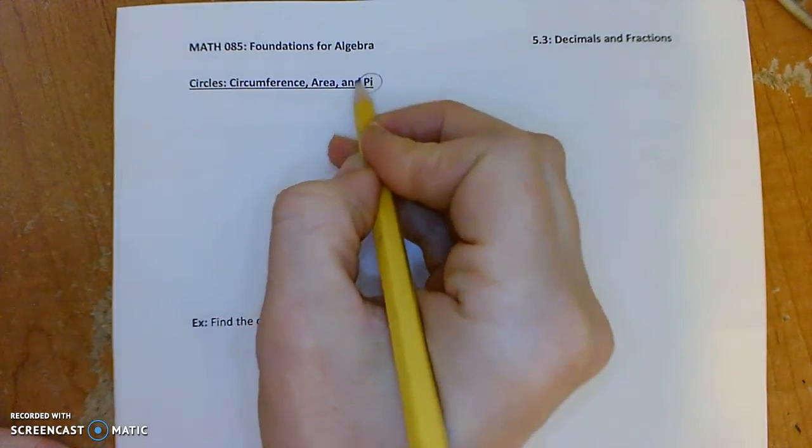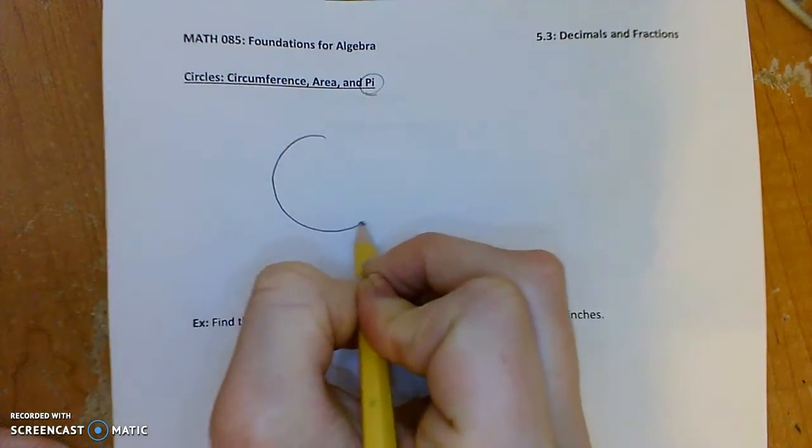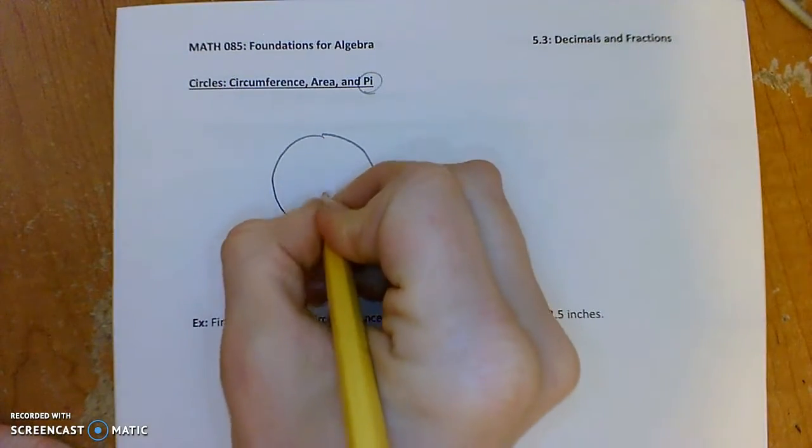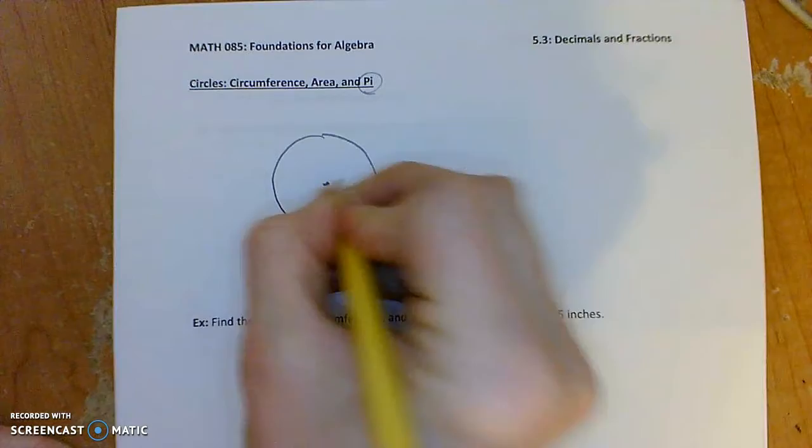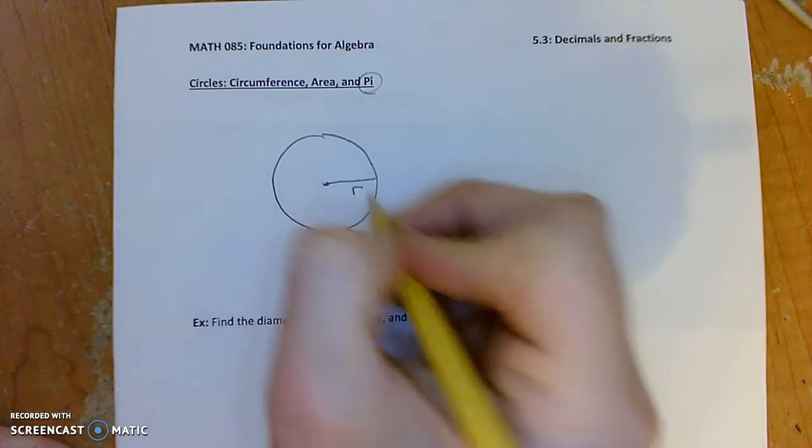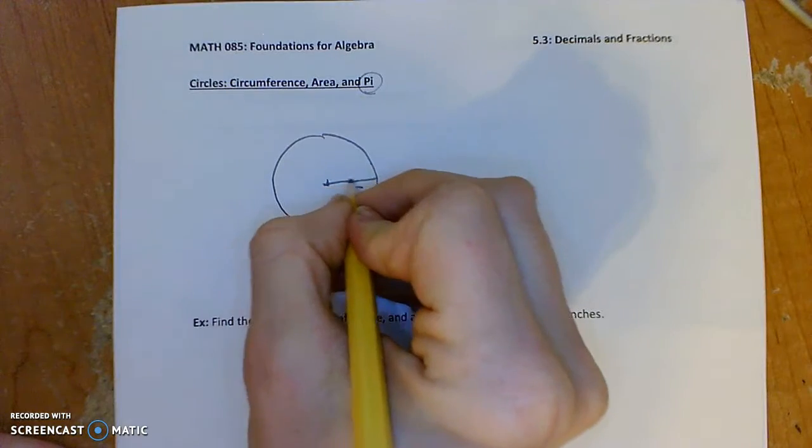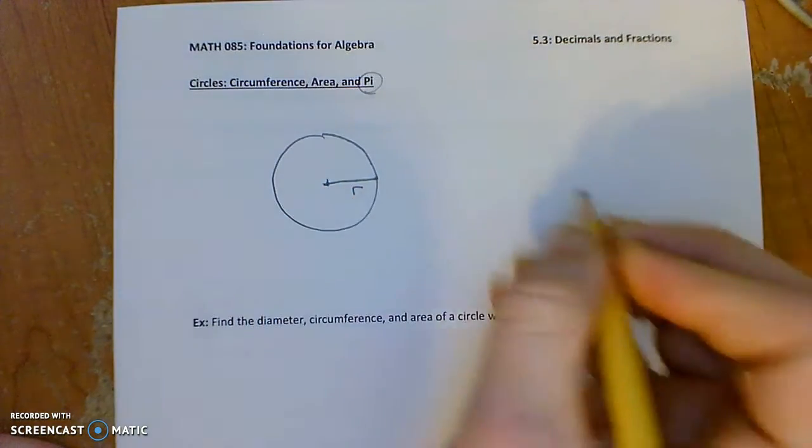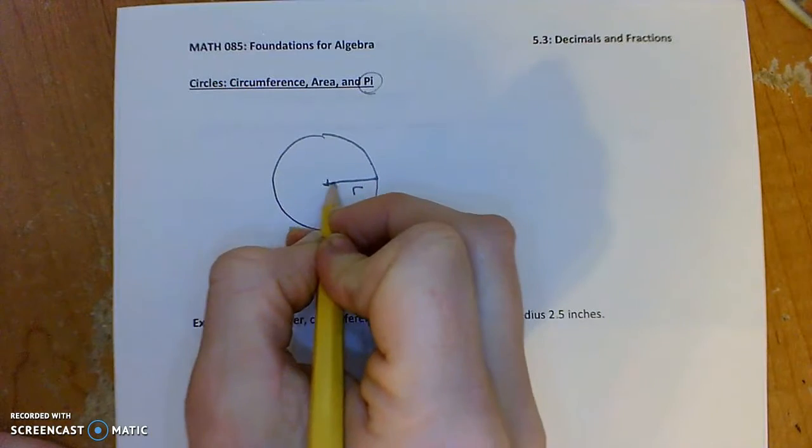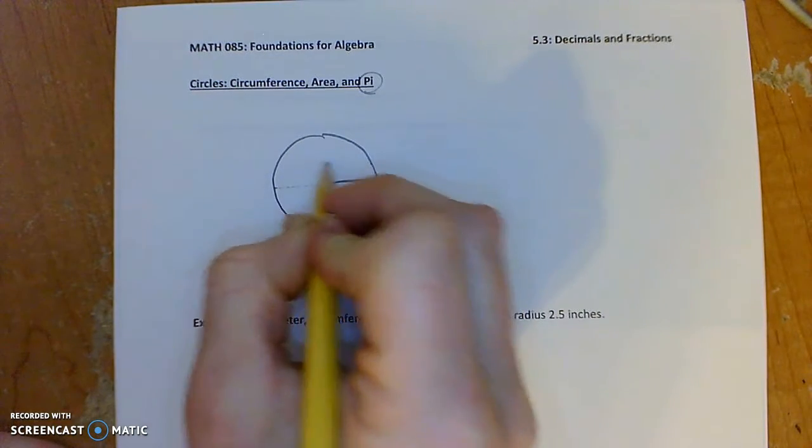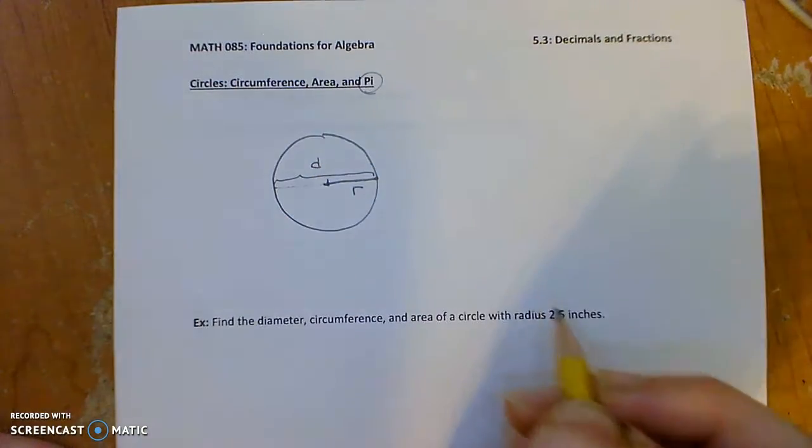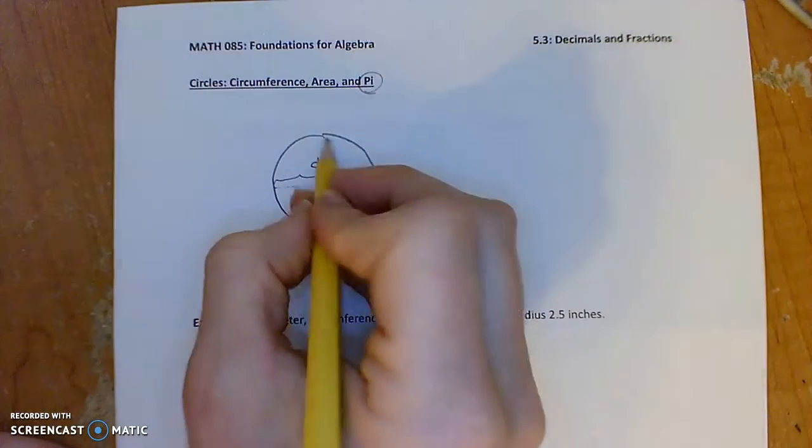Pi happens to be, for any circle, regardless of how large or small it is, your circle has a center. The distance between the center and any point on the circle here we'll call R for radius. So this length here, from the center out to the circle, is the radius. If you extend this line segment all the way to the other side, you get what's called here the diameter. The diameter of the circle is always twice the radius.